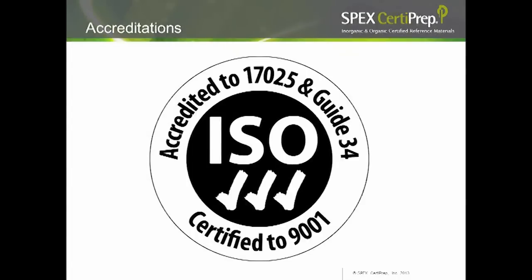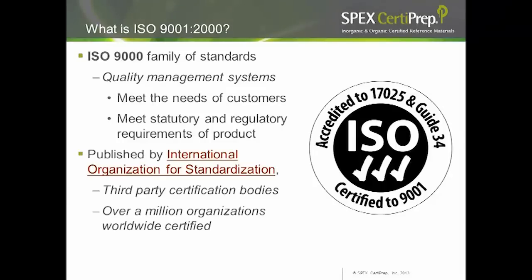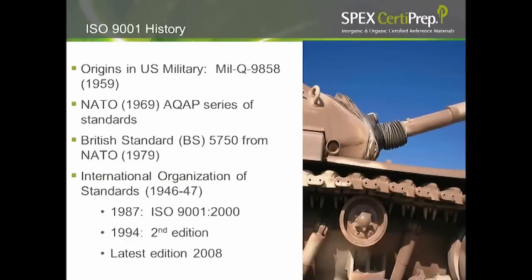The first thing we're going to look at is accreditations. Quite a few laboratories are ISO certified. ISO 9001 is a family of quality management standards, meaning you have a quality management system in place that meets your customers' needs and meets the statutory or regulatory requirements of the products you sell or services you provide. It has a very long history based in the military, starting in the 1950s with the U.S. military as a procedural procurement procedure.